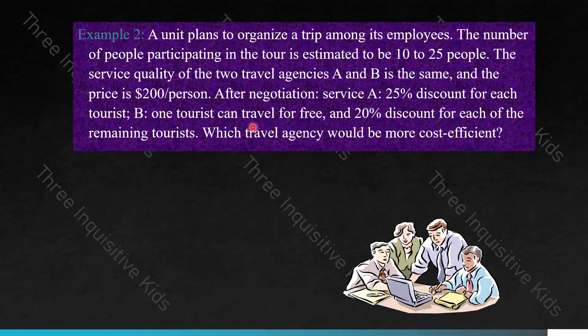Here is example two. A unit plans to organize a trip among its employees. The number of people participating is estimated to be 10 to 25. The service quality of travel agencies A and B is the same, and the price is $200 per person. After negotiating, service A gives a 25% discount for each tourist, while service B lets one tourist travel for free while the rest each get a 20% discount. Which travel agency would be more cost-efficient?